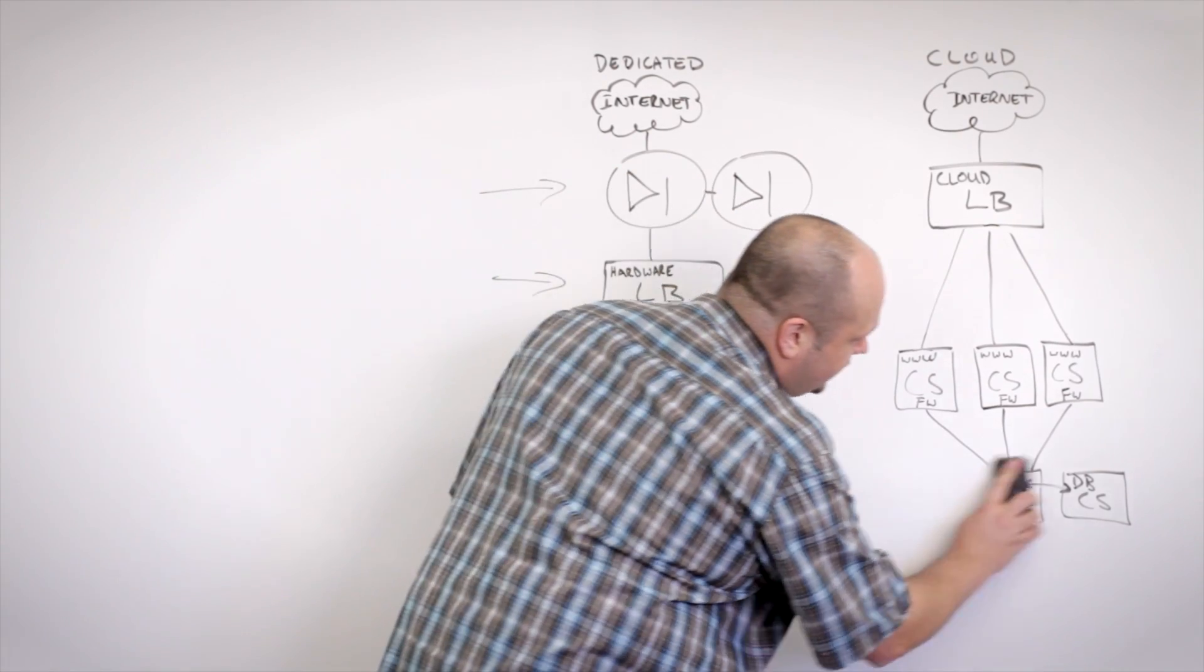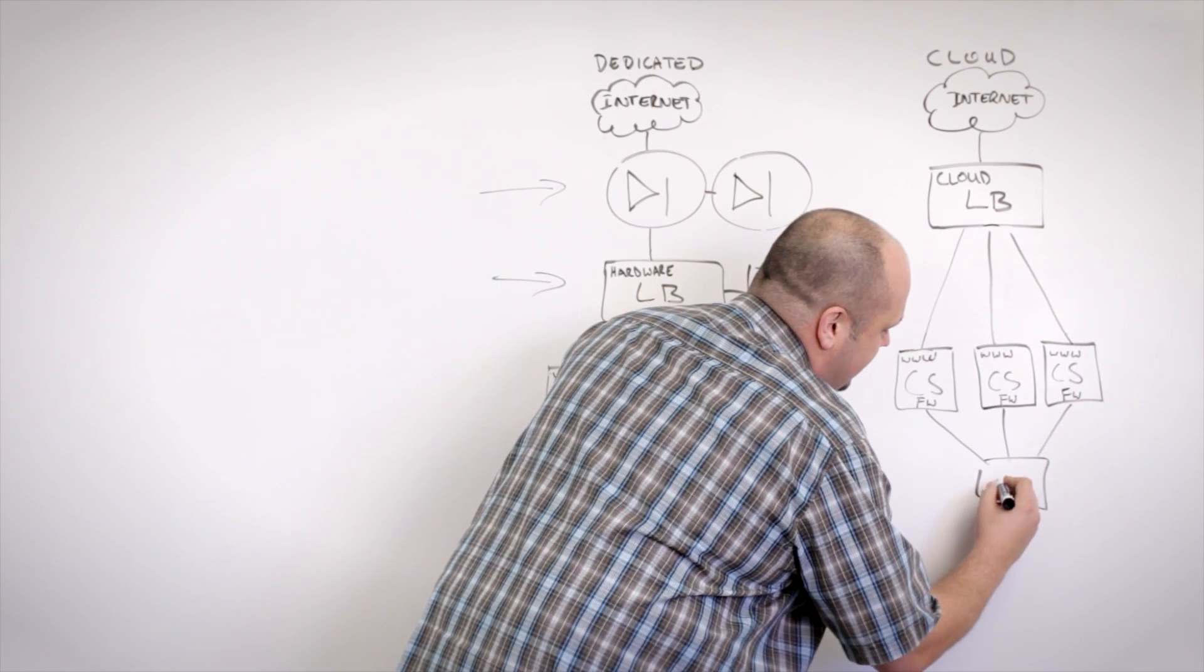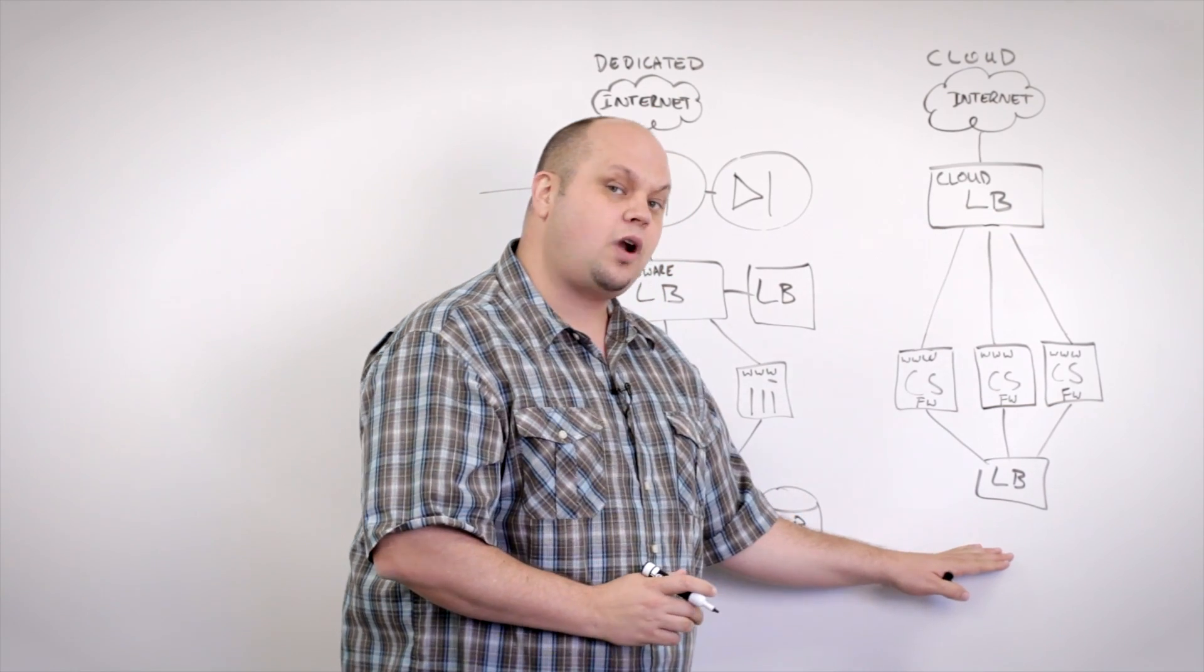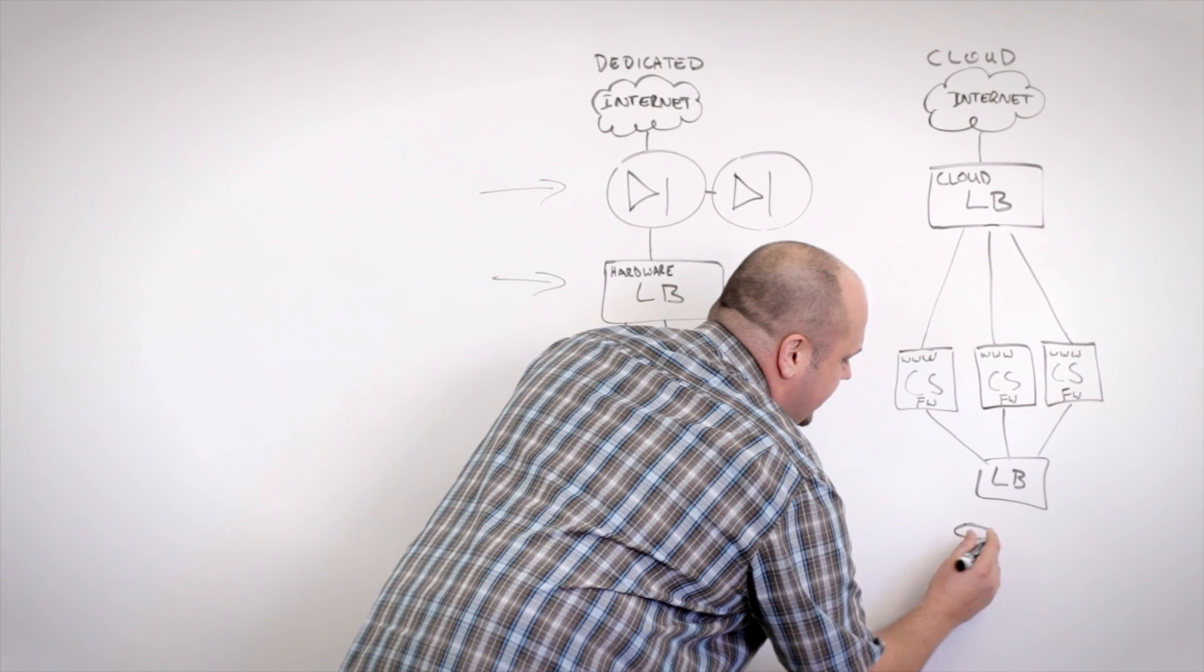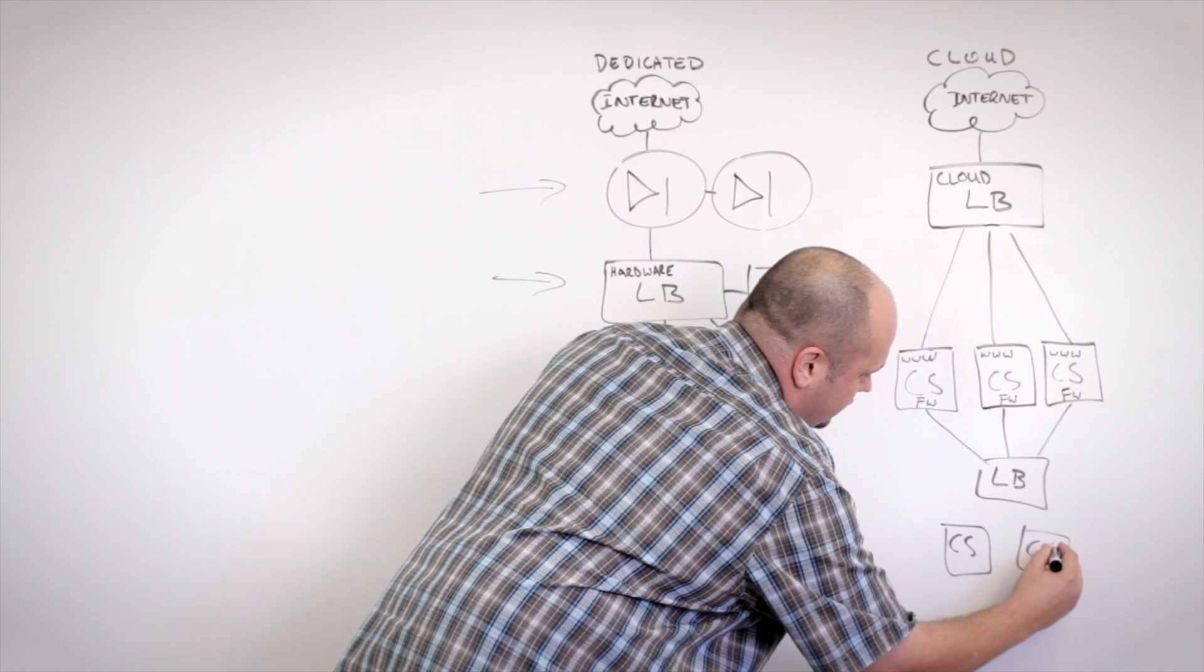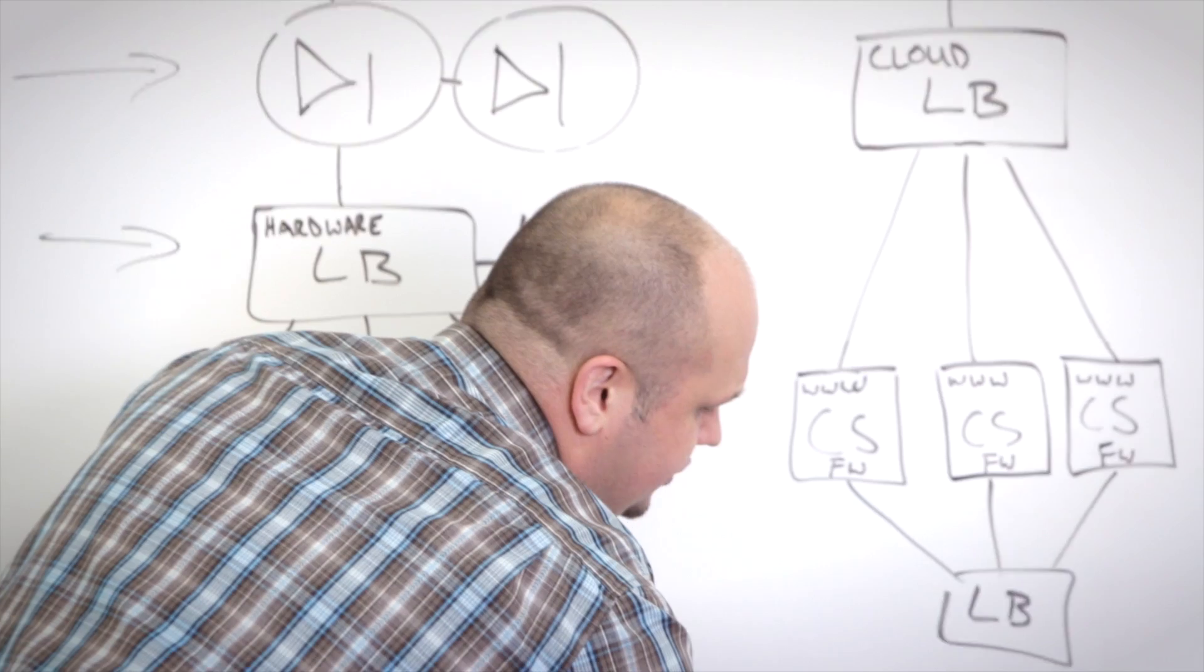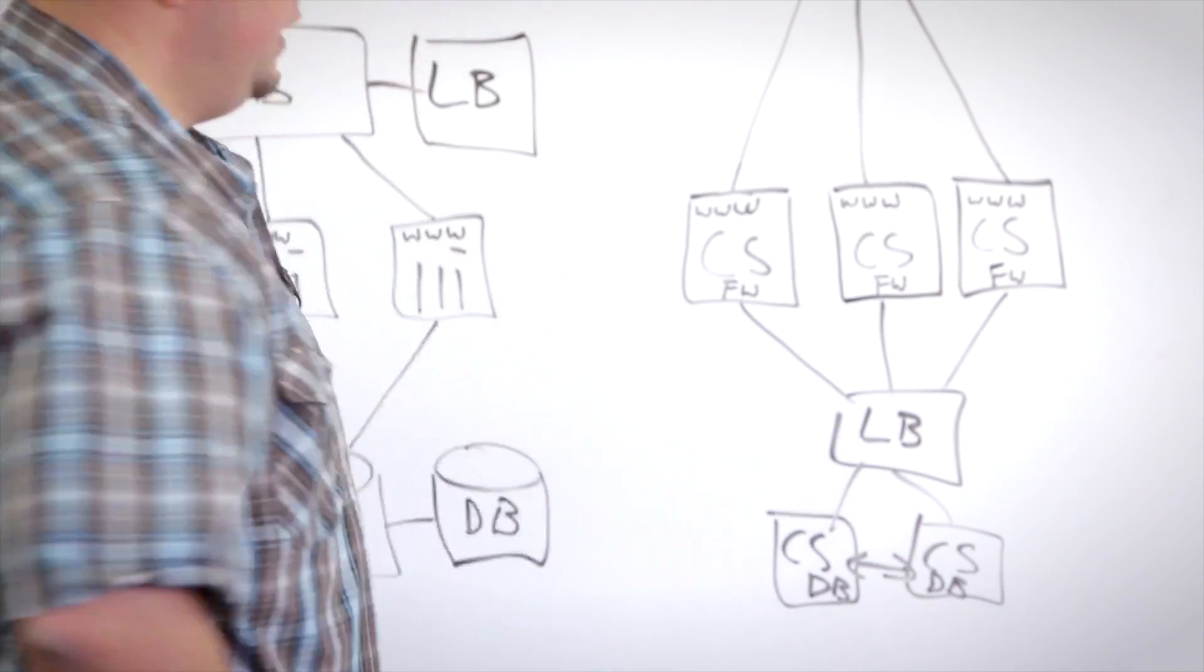And what I could do is throw another load balancer in here. If these databases were identical databases one to another, and I had them set up with mirroring, I could have two cloud servers down here. And I could run identical databases on these two cloud servers and balance between them.